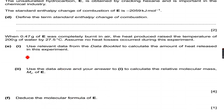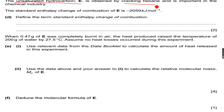The unsaturated hydrocarbon E is obtained by cracking hexane and is important in the chemical industry. The standard enthalpy change of combustion of E is minus 2059 kilojoules per mole. E is an unsaturated hydrocarbon, so most probably an alkene. Because it is obtained by cracking hexane, it is a hydrocarbon with six carbons or less.